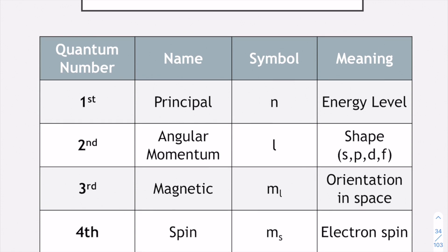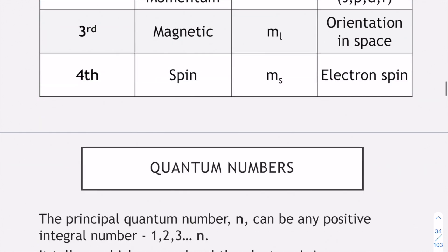We have four quantum numbers. First one being your principal, second one being your angular momentum, third one being magnetic and the fourth one being your spin. I'm going to take you through some of these quantum numbers just so they make a little bit more sense.